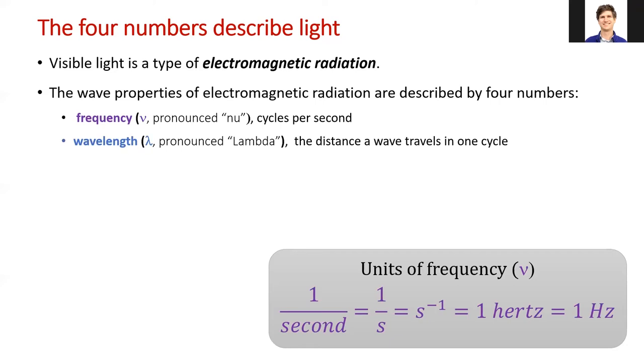The wavelength of light is the distance the wave travels in one cycle. In other words, it is the distance from the top of one peak to the top of an adjacent peak in a wave of light. We abbreviate wavelength with the Greek letter lambda.